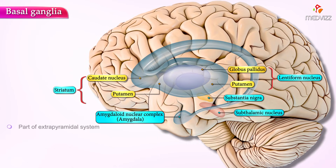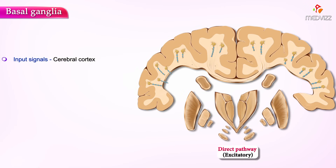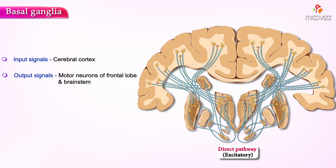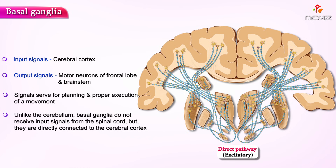The basal ganglia are part of the extrapyramidal system and participate in movement modulation. Input signals from the cerebral cortex are received and processed within the basal ganglia. After that, a focused output signal is created that ends up within the motor neurons of the frontal lobe and the brainstem, serving for planning and proper execution of movement. Unlike the cerebellum, the basal ganglia do not receive input signals from the spinal cord but are directly connected to the cerebral cortex.